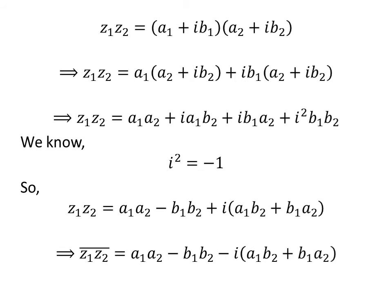So the conjugate of z1 times z2 is equal to (a1 times a2 minus b1 times b2) minus i times (a1 times b2 plus b1 times a2).